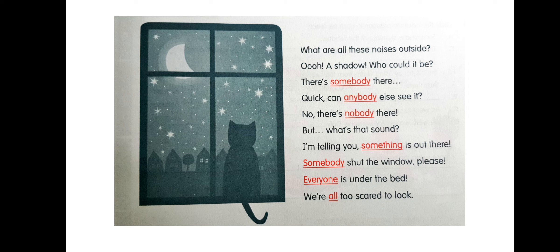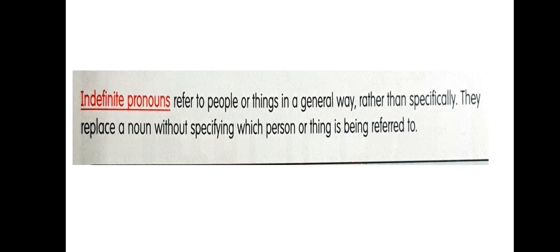The words like somebody, anybody, nobody, something, everyone, and all are indefinite pronouns — where you don't know the number of people who are being referred to. Indefinite pronouns refer to people or things in a general way rather than specifically.